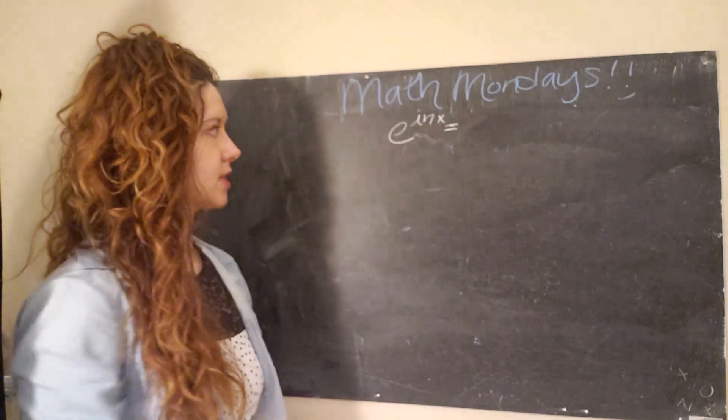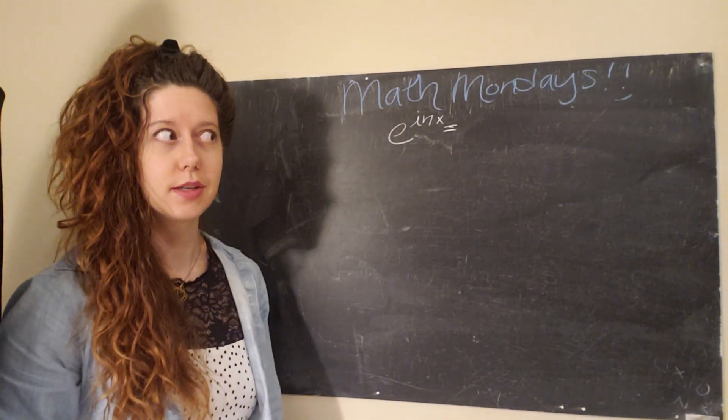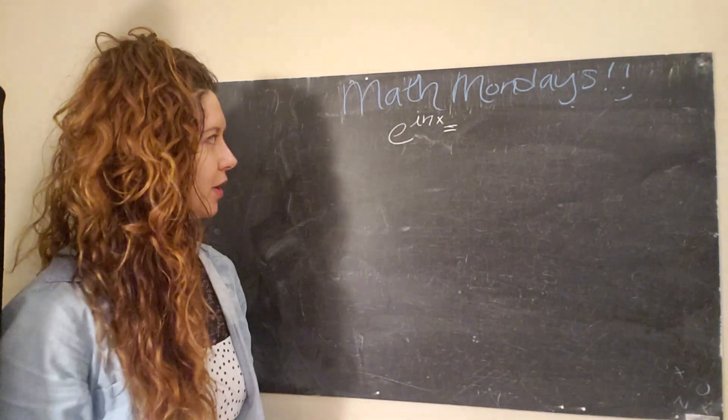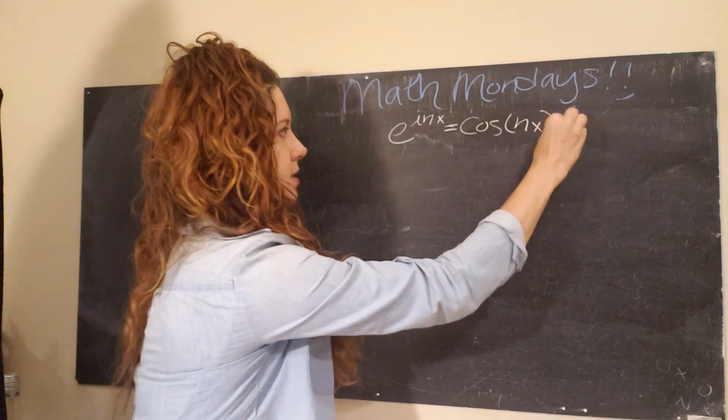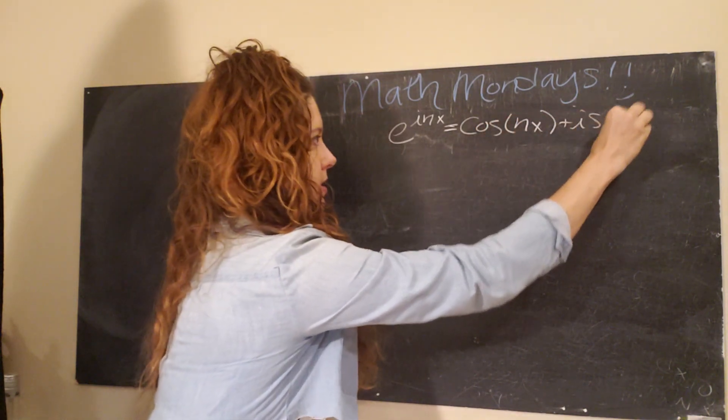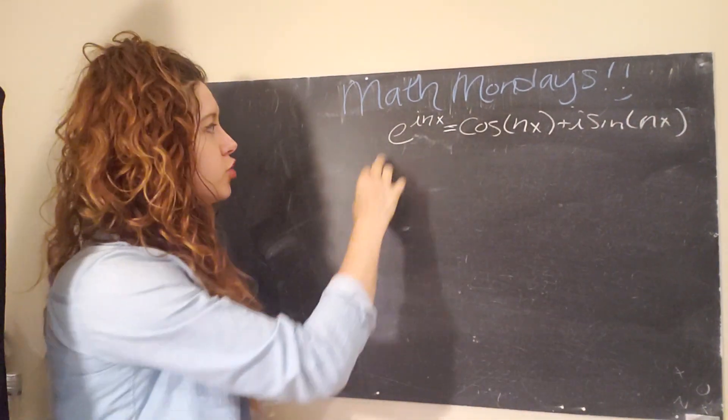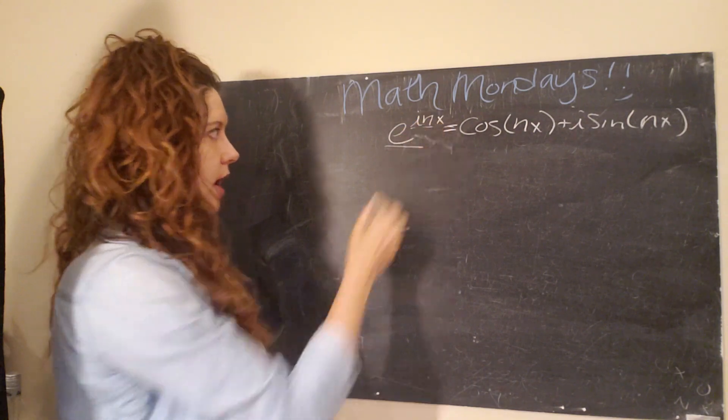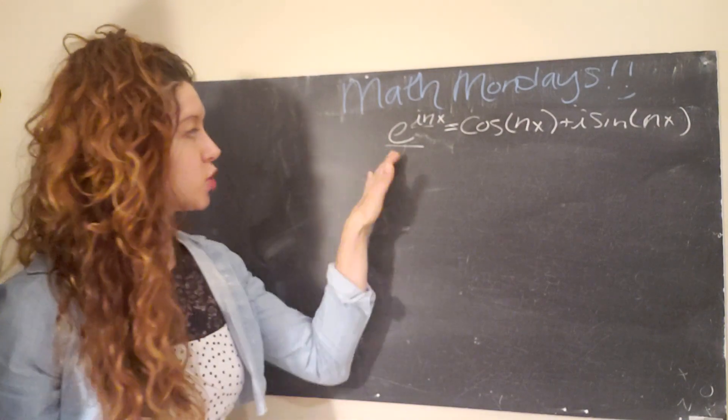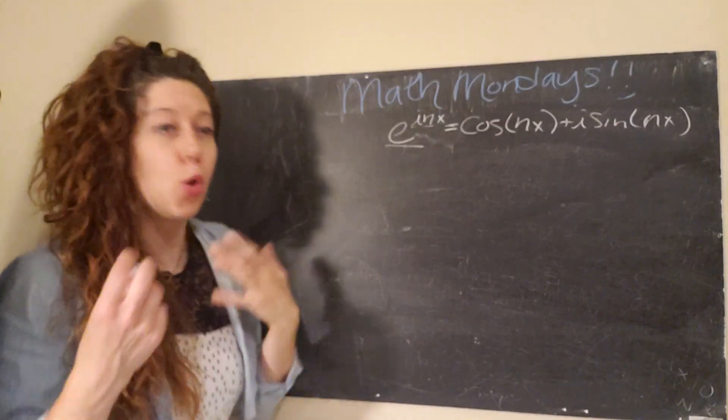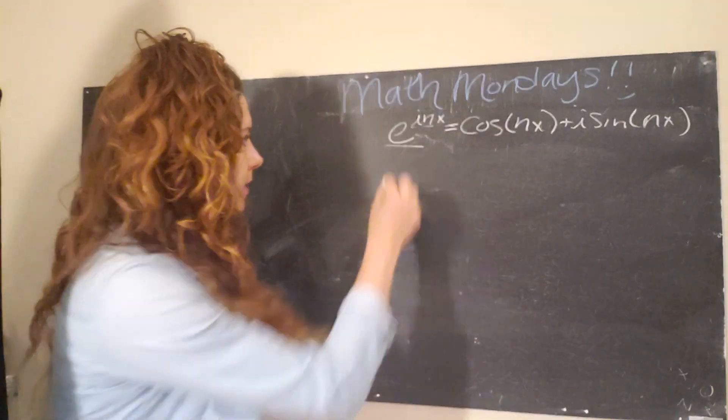And so what that looks like is that e to the inx can be written as a sum of sine and cosine. And so Euler did this as a Taylor expansion. One of my videos, I want to say the complex plane video does this. I'll link to it. Okay, so e to the inx can be written as cosine of nx plus i sine nx. Okay, so that's equation number one.